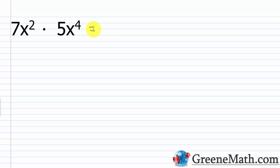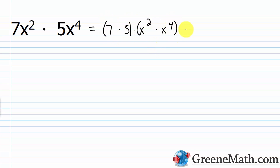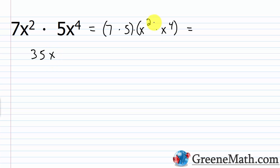Your textbook will show you that you can reorder things and write this as 7 times 5 times x squared times x to the fourth power, then group the number multiplication and the variable multiplication. 7 times 5 is 35. x squared multiplied by x to the fourth — x stays the same, and we just add exponents: 2 plus 4 is 6 — giving 35x to the sixth power.